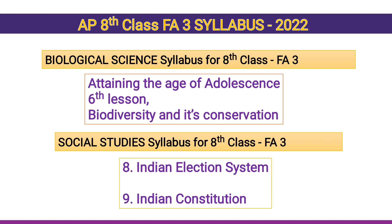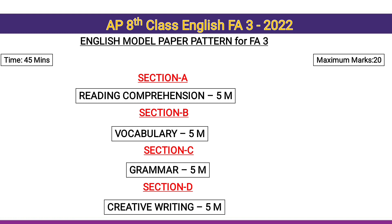Biological Science: fifth lesson — Attaining the Age of Adolescence; sixth lesson — Biodiversity and Its Conservation. Social Studies syllabus: eighth lesson — Indian Election System; ninth lesson — Indian Constitution. This is the model paper pattern for English, 8th class.